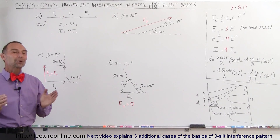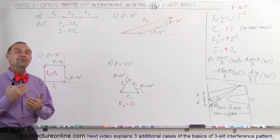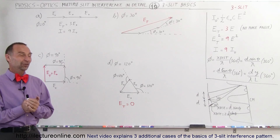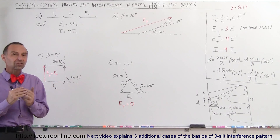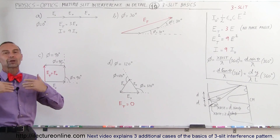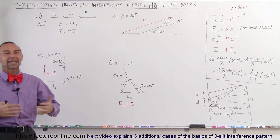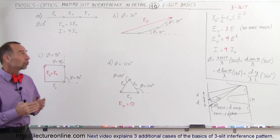Welcome to Electron Align. Now we're going to take a look at multiple slit interference patterns. To make it a little bit easier, let's start with three slits and then we're going to look at N slits — any number of slits in general.